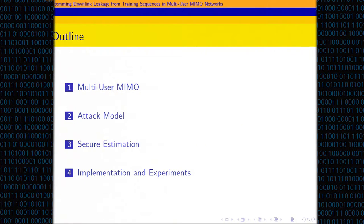This is my outline. First, we will have a brief review of multi-user MIMO networks, including some notations like CSI, beamforming, and training sequence. Then we will talk about our attack model, and I will introduce an illustration of a new eavesdropping attack in a time division duplex system. After that, I will introduce our secure CSI estimation scheme to secure the downlink of mobile users. Last, I will show the performance of our proposed scheme and some experimental results.